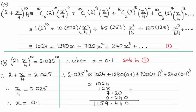but with such a high power to get these coefficients 1, 10, 45, 120, it takes quite a bit of working. So I would definitely go for the combinations method.